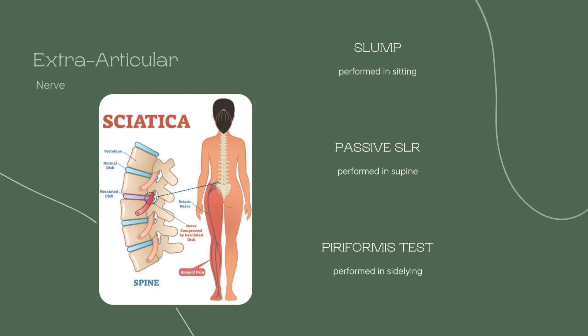And then lastly, the slump test. This is also looking at the sciatic nerve, specifically those nerve roots. The slump test is performed in sitting and puts the most strain on the sciatic nerve through cervical flexion, hip flexion, knee extension, and ankle dorsiflexion. You're just trying to reproduce those nerve pain symptoms.